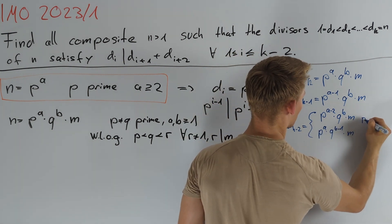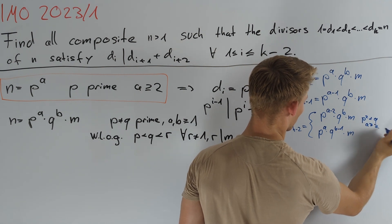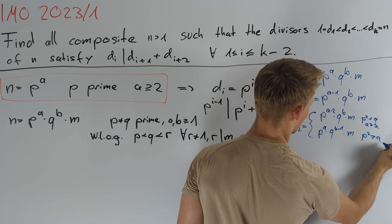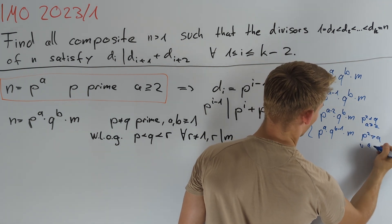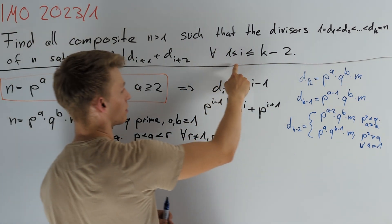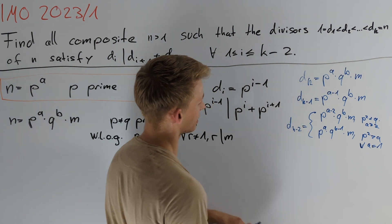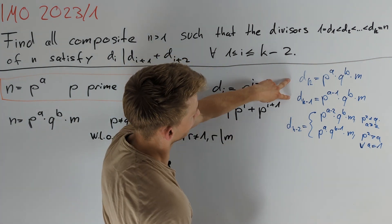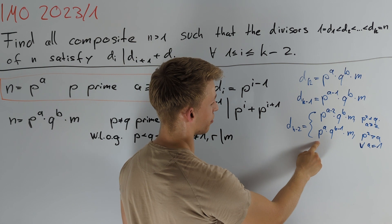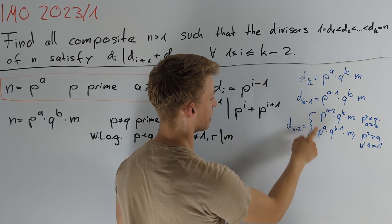The first case holds if p squared is less than q and a is greater than or equal to 2, and the second case holds if p squared is greater than q or if a equals 1. Looking at the given condition for i equals k minus 2, dk-2 must divide the sum of the next two divisors. If we are in the second case, p^a does not divide the sum, so we must be in the first case.